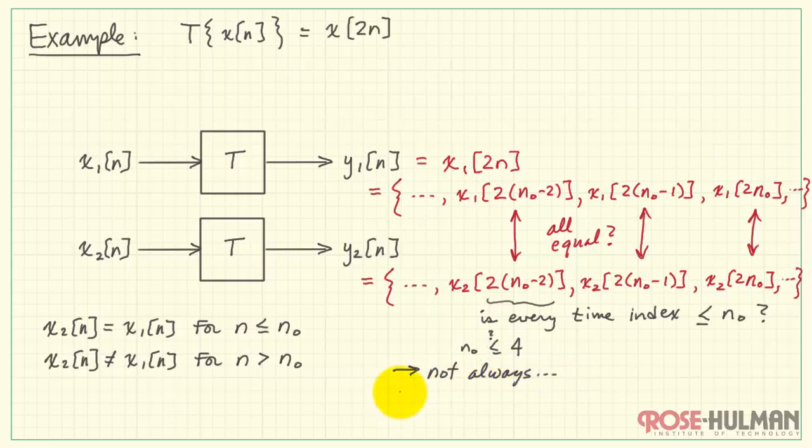And the answer would be no. It's not always. We can choose any possible value of n naught that we like.